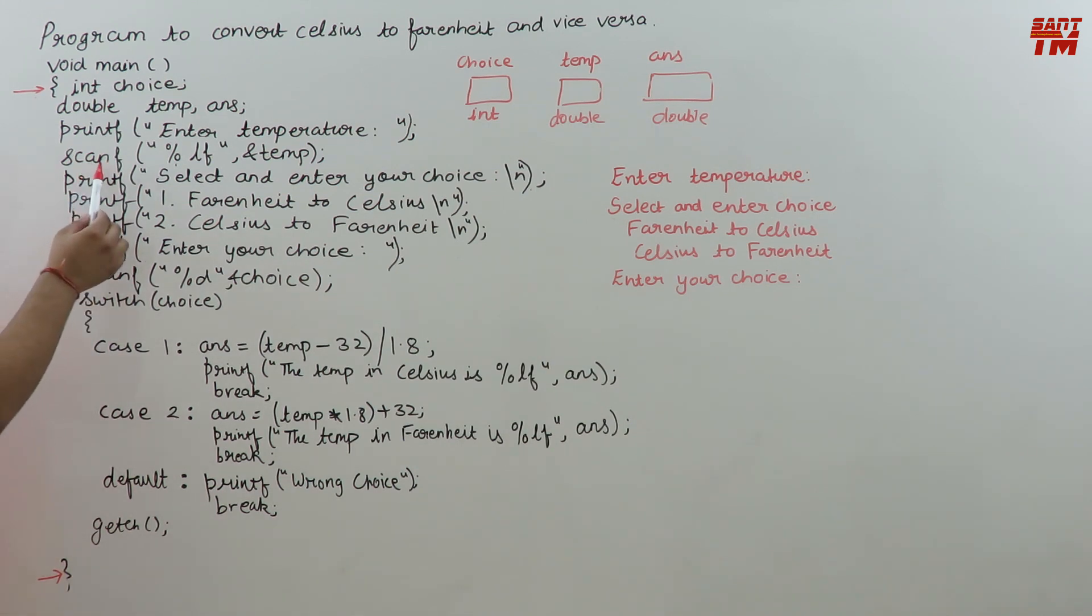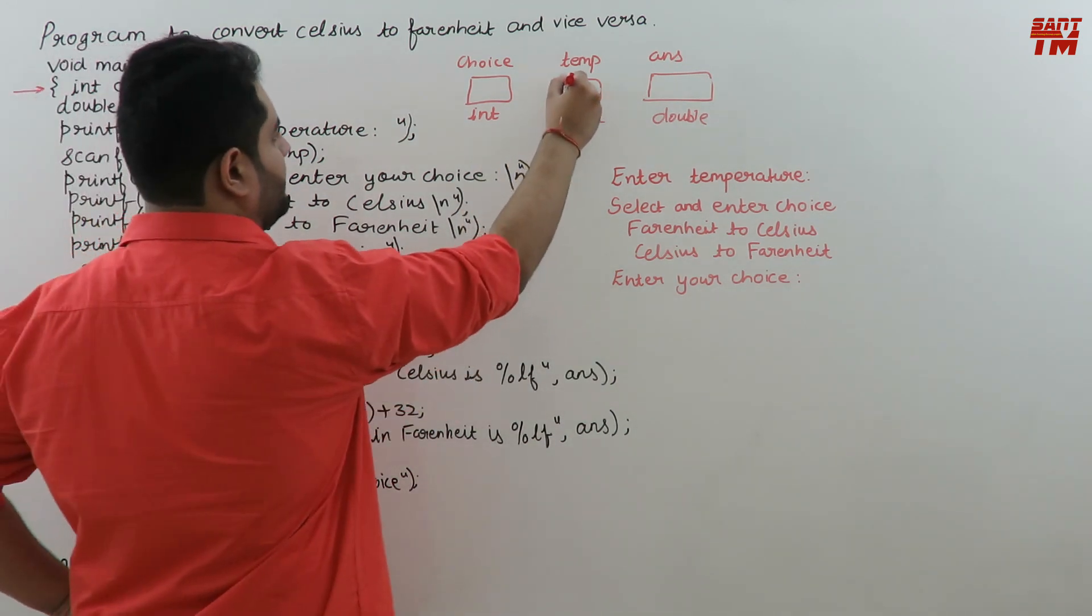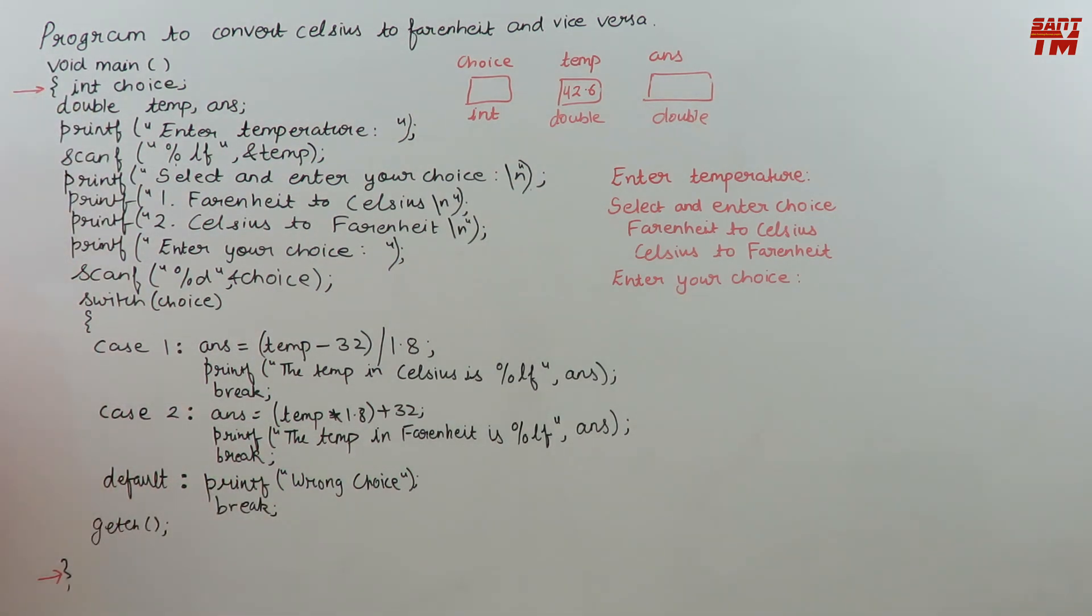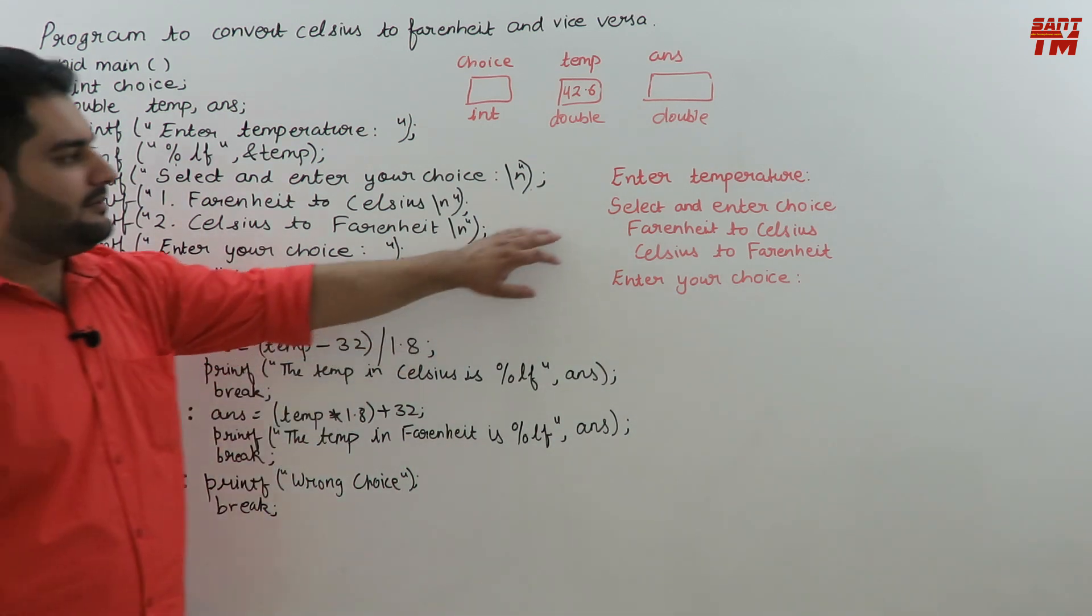Then scanf %lf, &temperature - the user will enter some temperature. Suppose the user has entered 42.6 as the temperature. Then printf select and enter your choice.